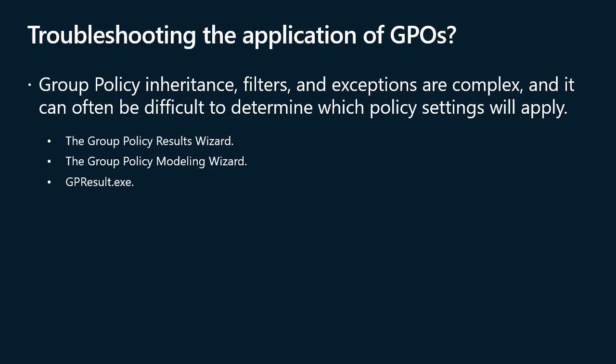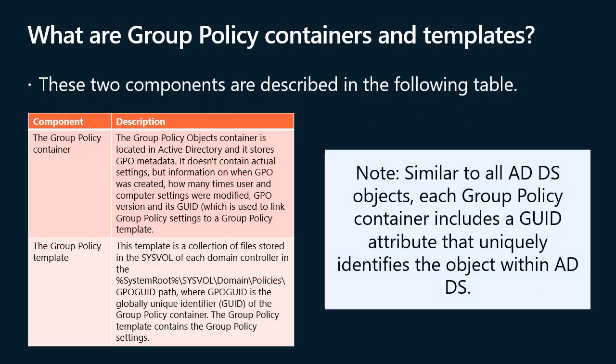The following tools exist for performing Resultant Set of Policy analysis: the Group Policy Results Wizard, the Group Policy Modeling Wizard, and the GPResult.exe command-line utility. Group policy settings present as GPOs in ADDS user interface tools, but a GPO actually includes two components: the group policy container and the group policy template.